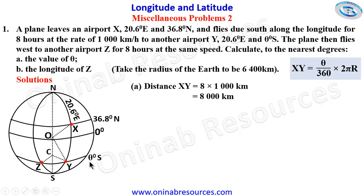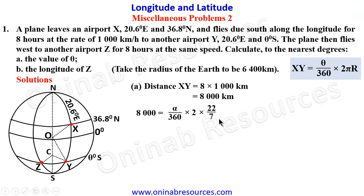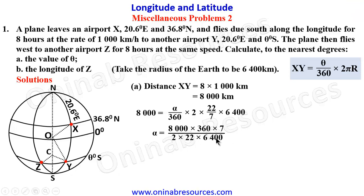To avoid confusion with theta, we use alpha. So: alpha/360 × 2 × 22/7 × 6400 = 8,000. Making alpha the subject of the relation: alpha = 8,000 × 360 × 7 ÷ 2 ÷ 22 ÷ 6400. Entering this into the calculator gives alpha = 71.59 degrees.